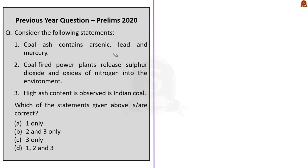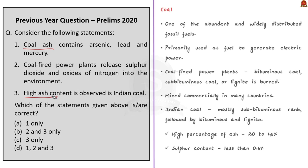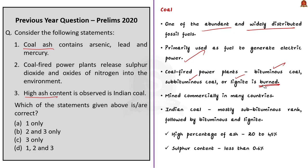The next question is based on coal — particularly coal ash pollutants released by coal-fired plants and the ash content in Indian coal. Coal is one of the abundant and widely distributed fossil fuels primarily used to generate electric power. In coal-fired power plants, bituminous coal, sub-bituminous coal, or lignite is burnt. In India, major power demand is met by thermal power plants. Indian coal is mostly sub-bituminous rank, followed by bituminous coal and lignite.